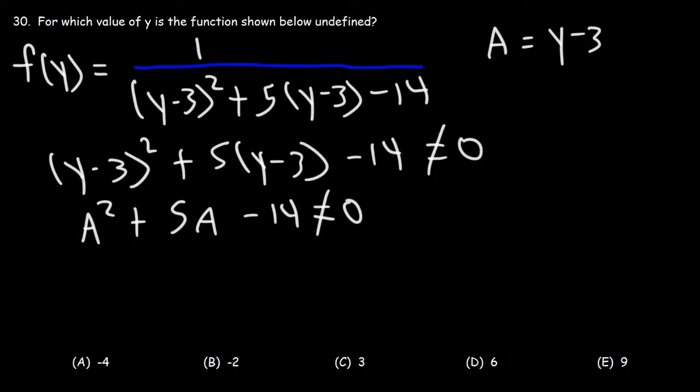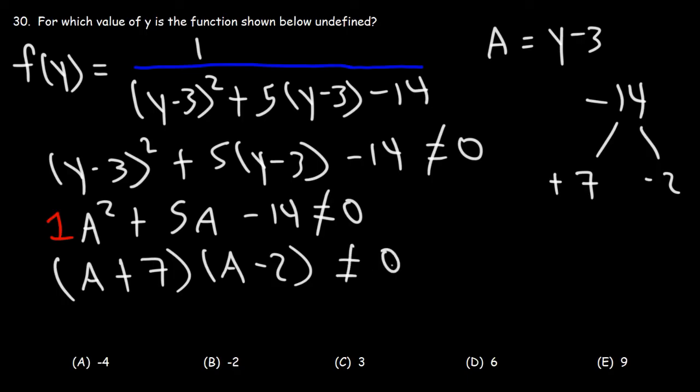So now let's factor it. We need to find two numbers that multiply to negative 14 but add to 5. So this is going to be positive 7 and negative 2. So to factor it, it's going to be a plus 7 times a minus 2. Solving for each factor, we're going to have that a can't be negative 7 and a cannot be positive 2.